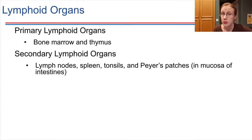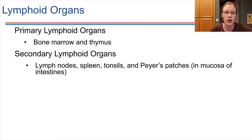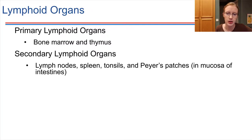Secondary lymphoid organs also include the spleen, the tonsils, and Peyer's patches, which are embedded in the mucous membranes of our intestines. They have a very important job being located there — a lot of the food we ingest may contain pathogens, and those Peyer's patches do a good job of capturing most of the pathogens and dealing with them before they make their way into circulation in the body.